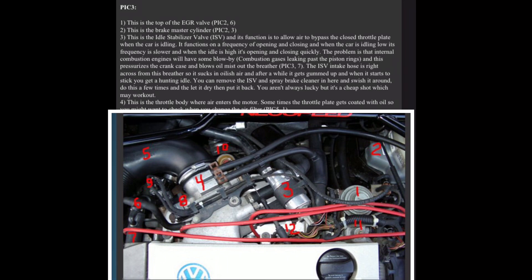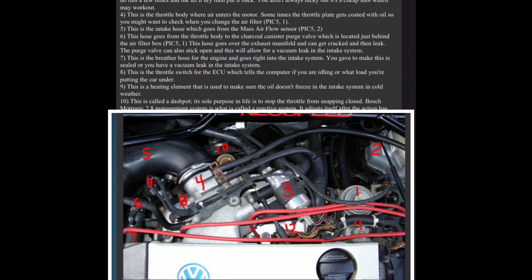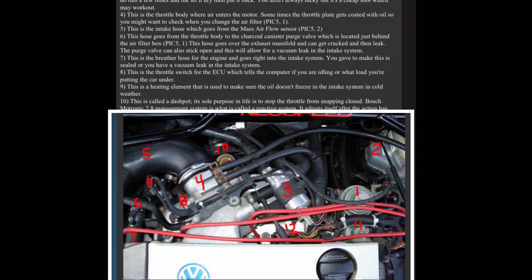It functions on a frequency of opening and closing, and when the car is idling low its frequency is slower, and when the idle is high it's opening and closing quickly. The problem is that internal combustion engines will have some blow-by, combustion gases leaking past the piston rings, and this pressurizes the crankcase and blows oil mist out the breather, pick three, seven. The ISV intake hose is right across from this breather, so it sucks in oily air and after a while it gets gummed up and when it starts to stick you get a hunting idle. You can remove the ISV and spray brake cleaner in here and swish it around, do this a few times and then let it dry then put it back. You aren't always lucky but it's a cheap shot which may work out for you.